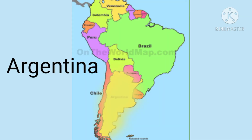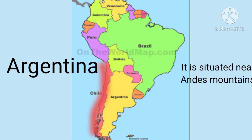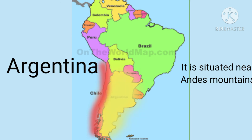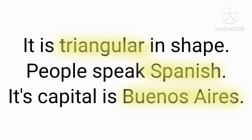Argentina is triangular in shape, situated near the Andes mountains, which is shown by a pink blinking line. People speak Spanish, and its capital is Buenos Aires.